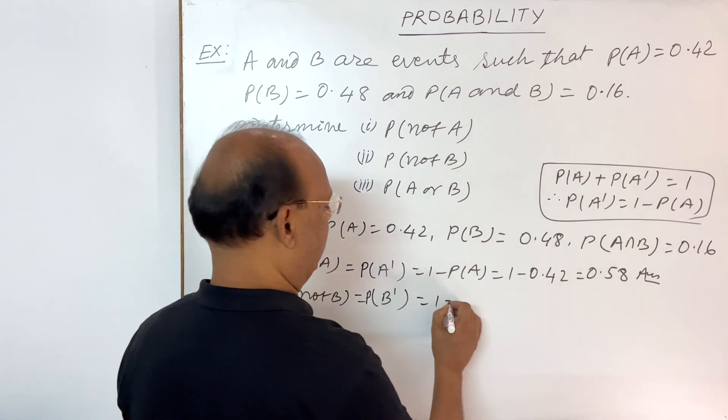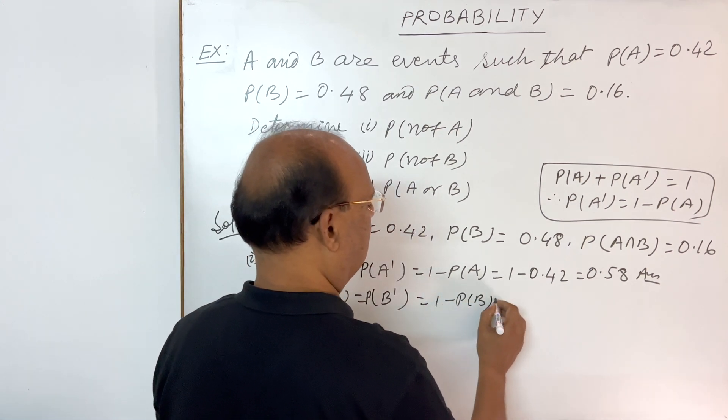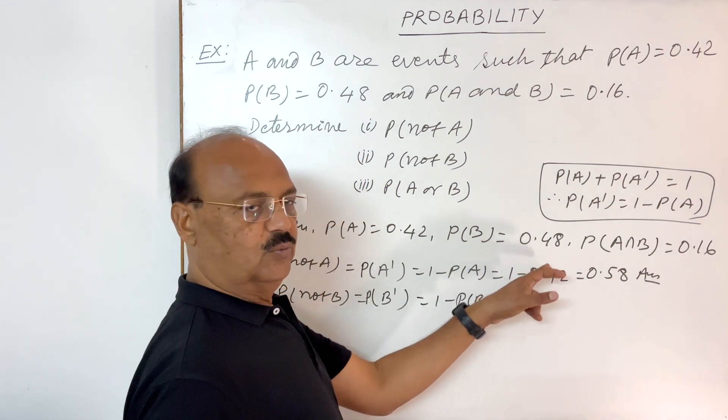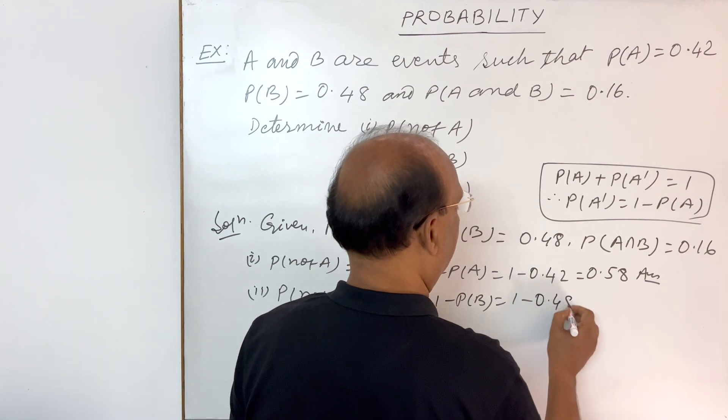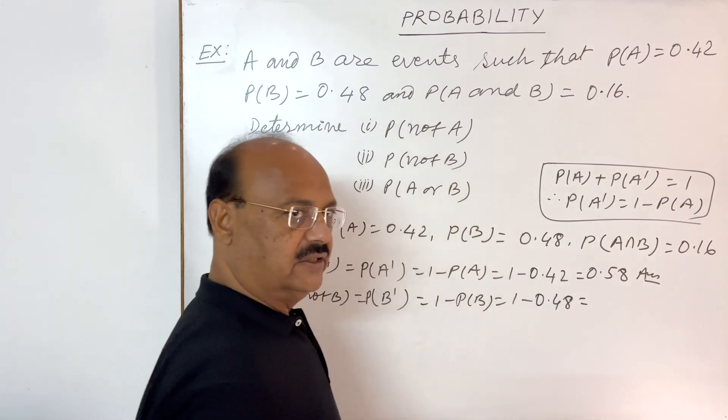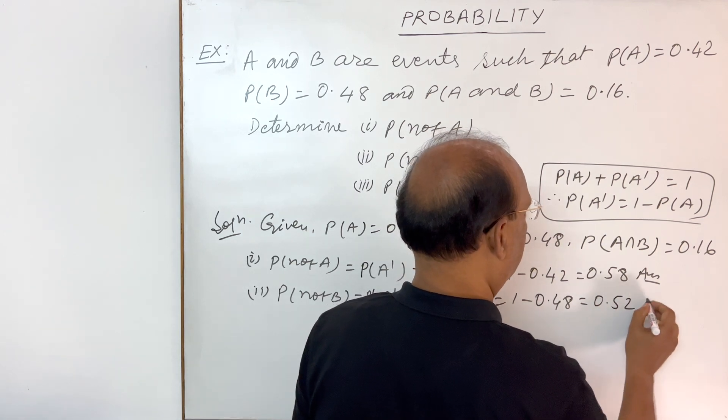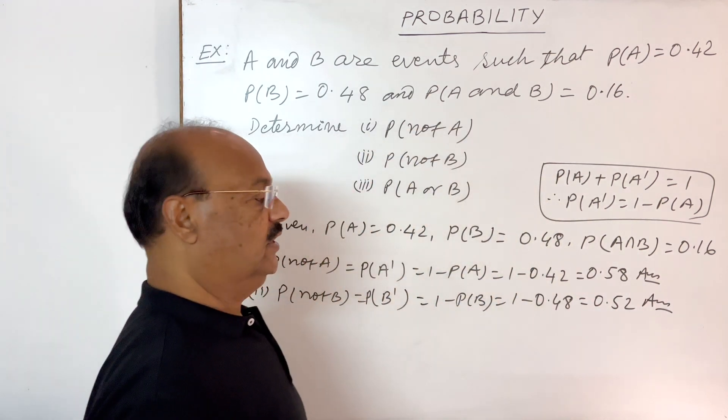And this will be equal to 1 minus probability of B. And this is 1 minus, probability of B is given here, 0.48. This is 0.48. And this is 0.52. This is the answer of the second part.